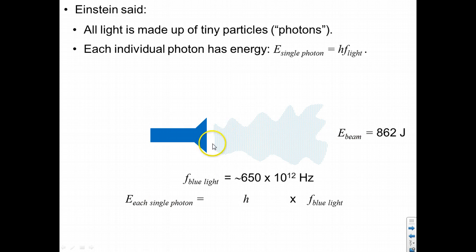The energy of each photon in this blue light is h, which is about 6.626 times 10 to the negative 34. And then we multiply h, Planck's constant, by the frequency, 650 times 10 to the 12. And this gives us about 431 times 10 to the negative 21 joules.